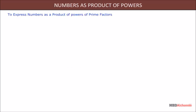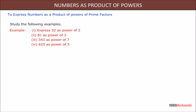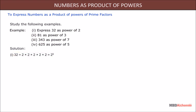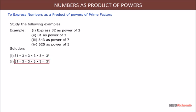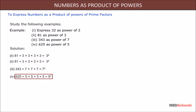To express numbers as a product of powers of prime factors, consider the following examples: 32 = 2 × 2 × 2 × 2 × 2 = 2⁵; 81 = 3 × 3 × 3 × 3 = 3⁴; 343 = 7 × 7 × 7 = 7³; 625 = 5 × 5 × 5 × 5 = 5⁴.